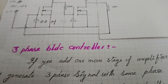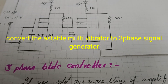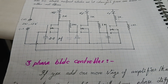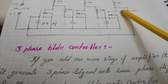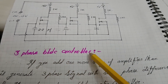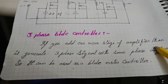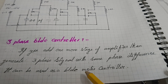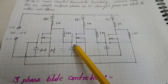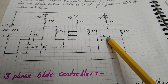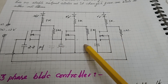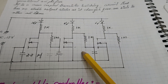To convert it to a three-phase signal generator, if you add another stage of amplifier it will generate a three-phase signal with the same phase difference, so it can be used as a BLDC motor controller. An astable multivibrator has two stages; for the three-phase signal generator it has three stages, but the feedbacks are still cross-coupled.